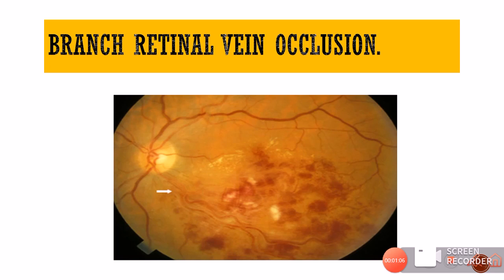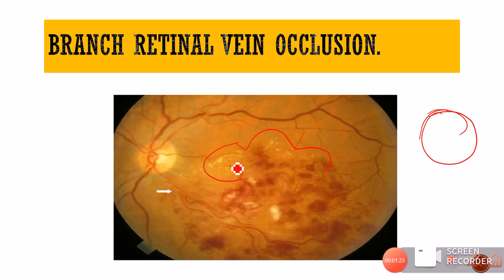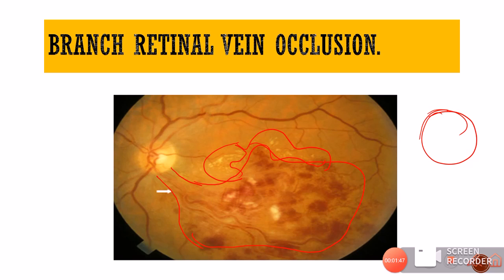In branch retinal vein occlusion (BRVO), hard exudates can also be present in a ring structure — either a complete or incomplete circinate ring. In this image the ring is incomplete because hemorrhages are blocking part of it. BRVO shows sectoral distribution: here the inferior arcade is involved, with exudates and hemorrhages all present inferiorly, indicating inferior temporal BRVO with macular edema.